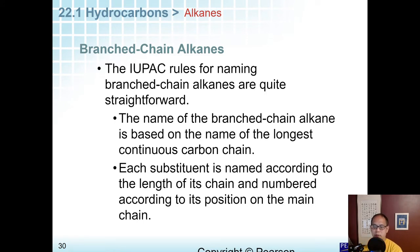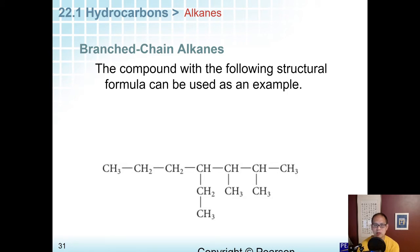IUPAC is the people who decide the rules about how we name these things. They say it's quite straightforward. It's actually straightforward if you take your time and work through it slowly like a puzzle. The name of the branched chain alkane is based on the name of the longest continuous carbon chain, which makes sense. The longest one gets the name, the overall name, and then everything else is going to be prefixes in front of that name. Each substituent is named according to the length of its chain and numbered according to its position. It's going to be way easier to take a look at the actual picture.